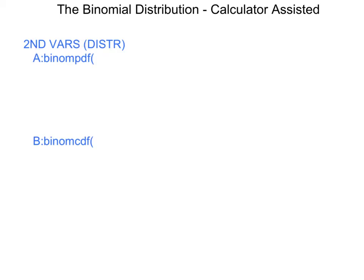If you scroll way down in that list, all the way down to A and B, you'll find two things. One of them says binom PDF, and one of them says binom CDF.